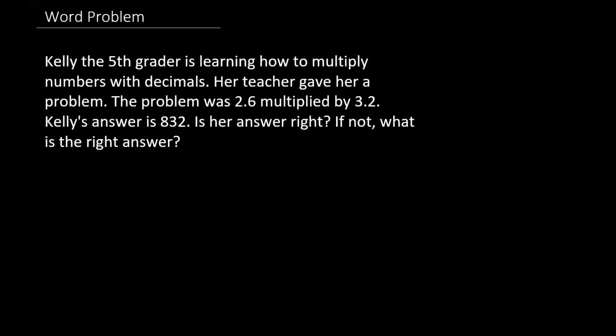Word problem. Kelly, a fifth grader, is learning how to multiply numbers with decimals. Her teacher gave her a problem: 2.6 multiplied by 3.2. And Kelly's answer is 832. Is her answer right? If not, what is the right answer? We can do both methods. I'll do both of them.